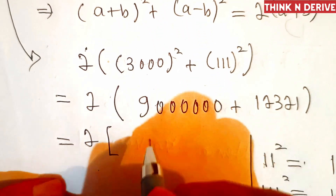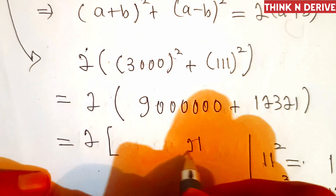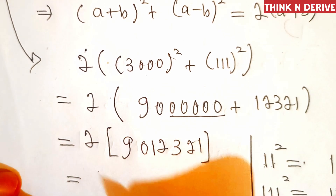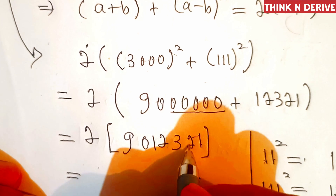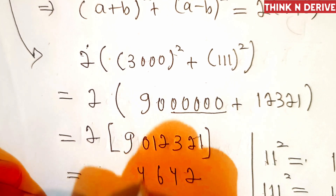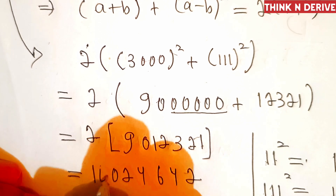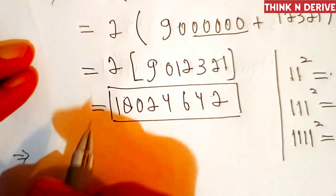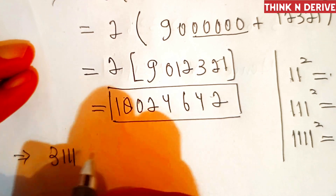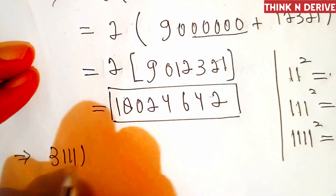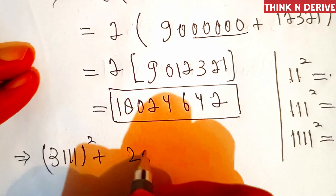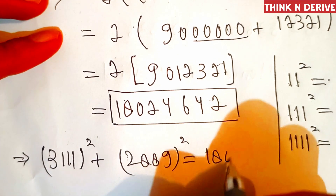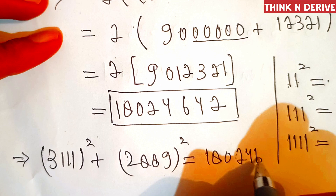So we have 2 × (9,000,000 + 12,321) = 2 × 9,012,321 = 18,024,642. Therefore, 3111² + 2889² equals 18,024,642.